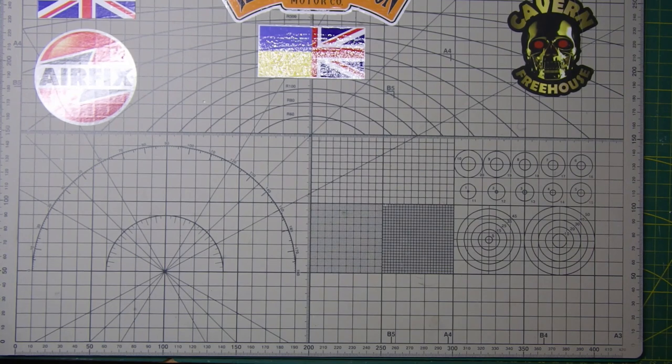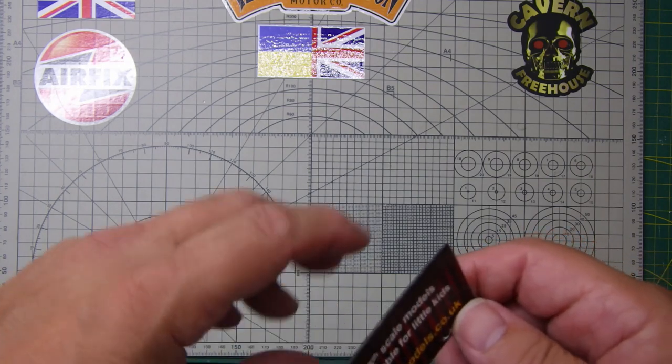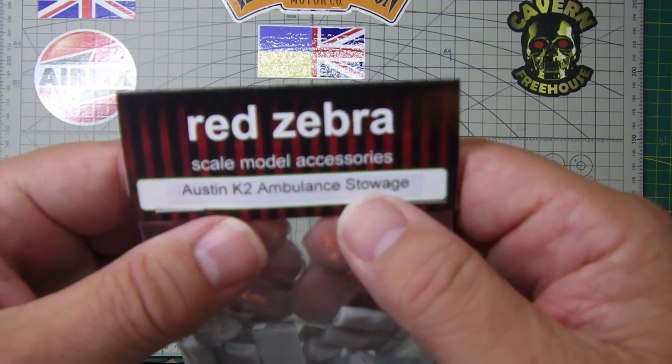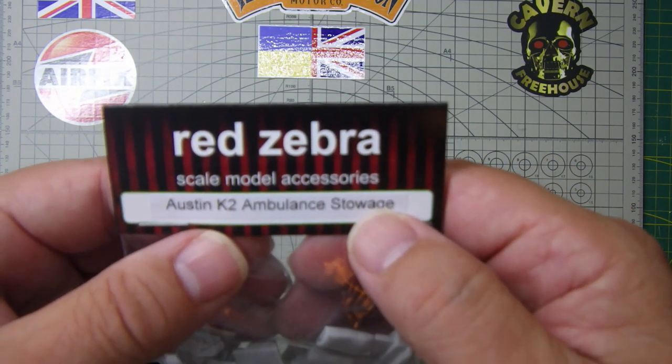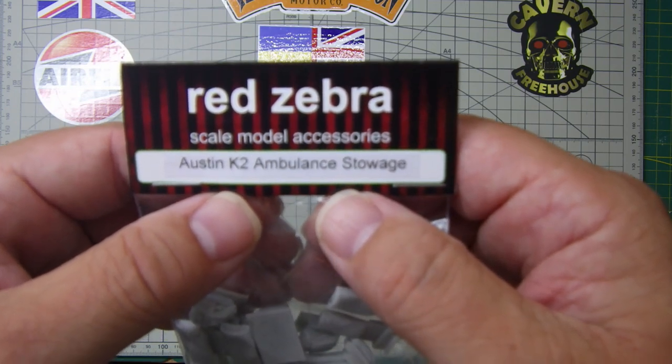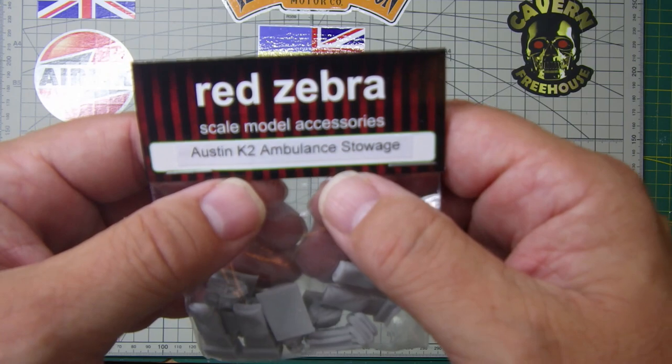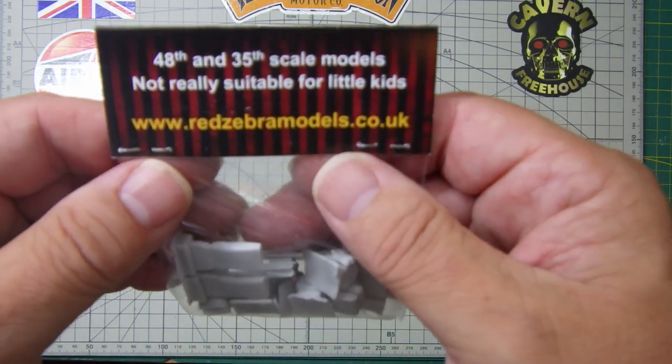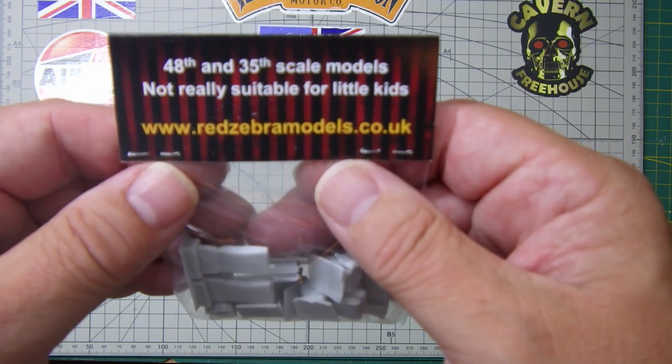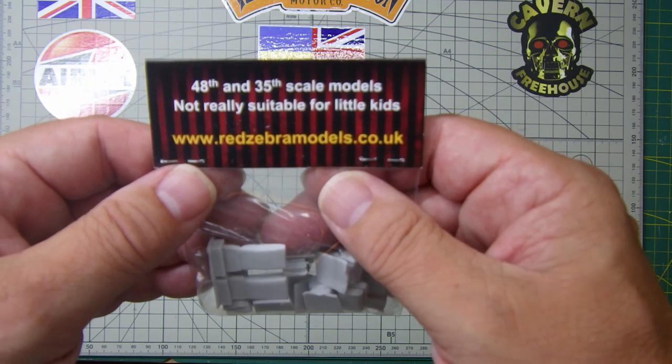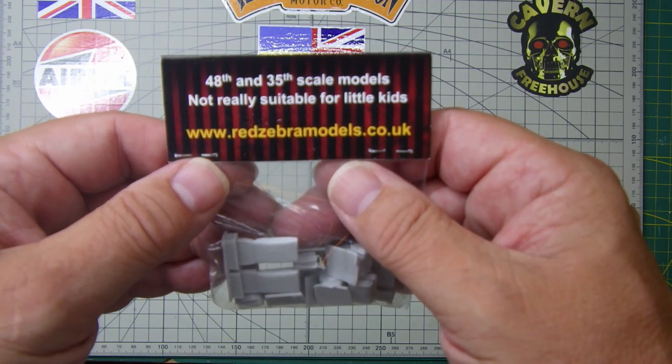Hi guys, it's Bob from Greybeard Models, probably the second video of the day. Just come across this product from Red Zebra scale model accessories. They do Austin K2 ambulance stowage, which is pretty cool. I want to check them out. That's their website address, I hope that's come out.